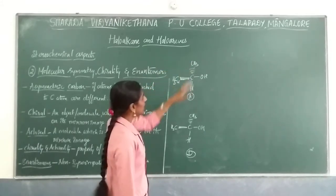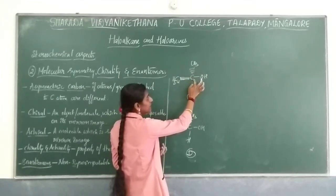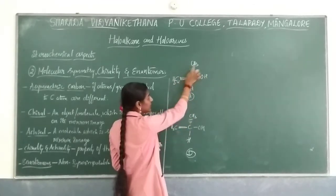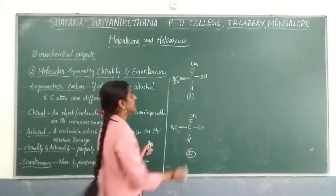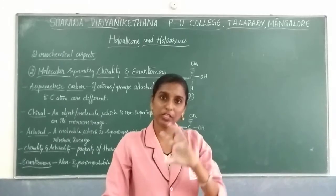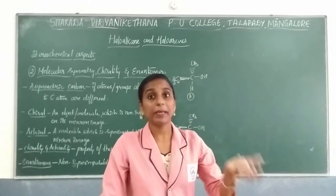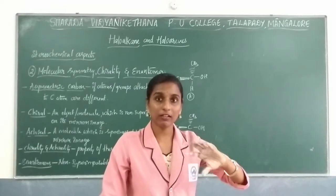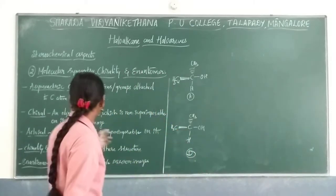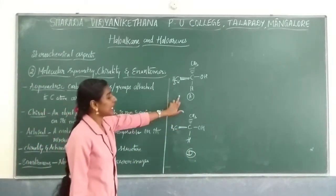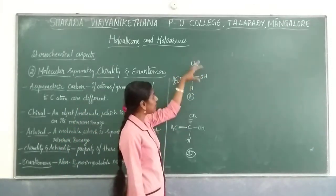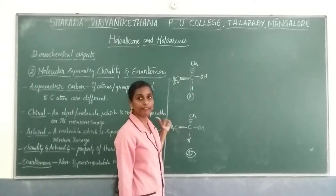In this structure, you should check the carbon — whether it is a symmetric carbon or an asymmetric carbon. All the groups which are present are different, so we can say this is an asymmetric carbon. Remember, most of the time an asymmetric carbon will show optical activity, as it will be having a chiral center or chiral carbon present.